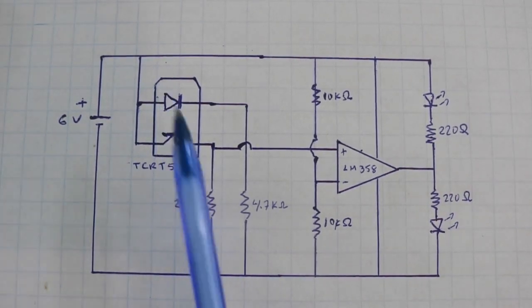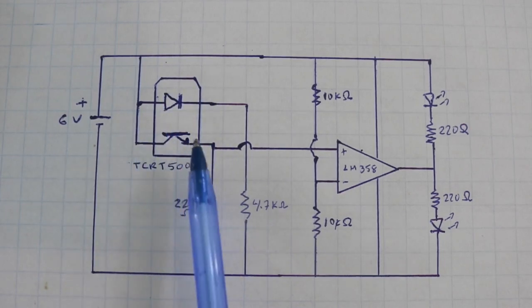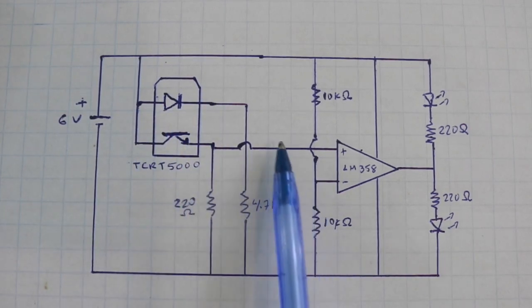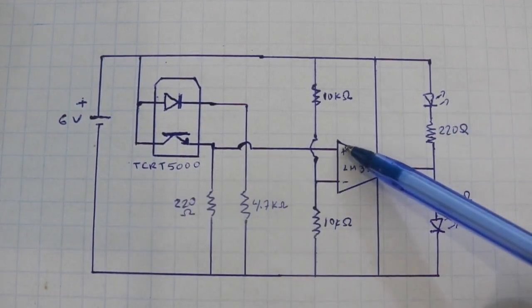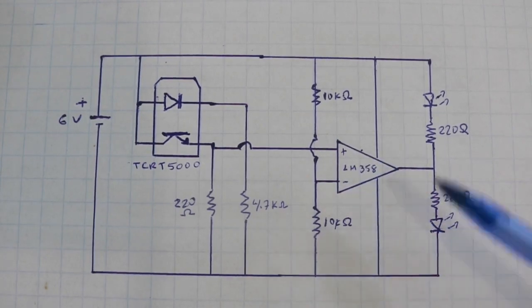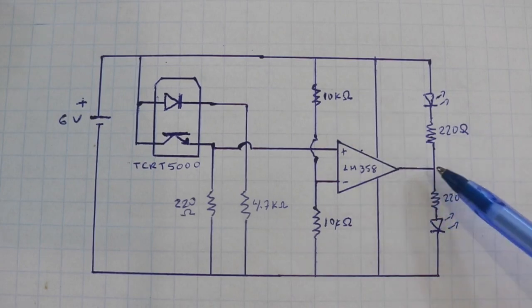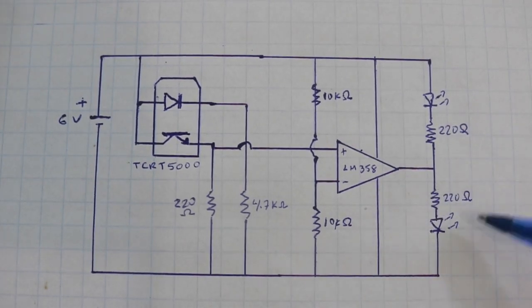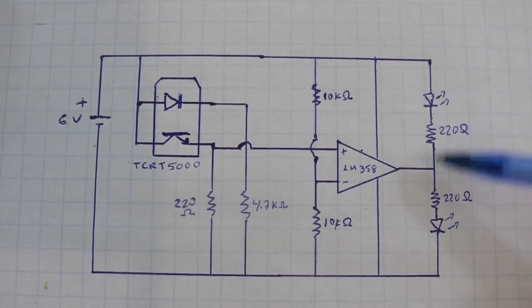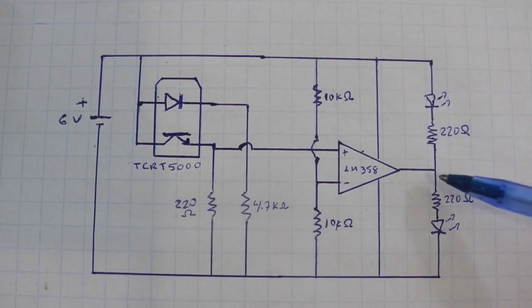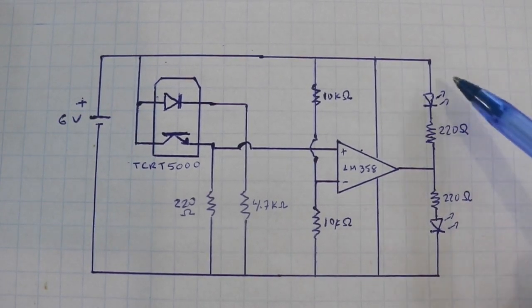Now, if the sensor emits a signal, here we will have around 5 volts which is higher than 3. Therefore, at the output we will have 6 volts and this LED will go on and the other will be at potential of 6 and 6. Therefore, this will go off.